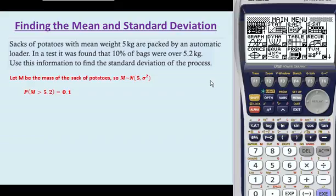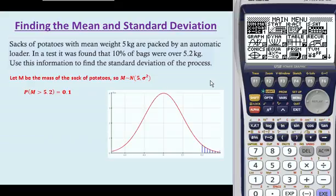Let's think about this in a graph. On the graph of our normal distribution here, we have our bell-shaped curve with the mean going through 5 here, and a standard deviation that we don't know. But what we do know is that at 5.2, the area above that is equal to 0.1.